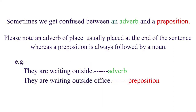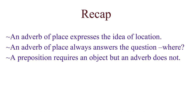Now I am sure you can easily identify an adverb and a preposition in any sentence. Please remember, an adverb can stand alone, whereas a preposition is always followed by a noun or an object. For example: They are waiting outside — here the word outside is standing alone, hence it is an adverb. They are waiting outside office — the word outside is followed by a noun, that is, office, hence it is a preposition.